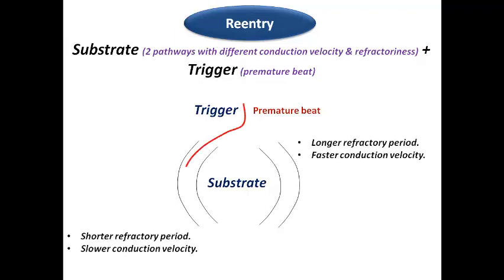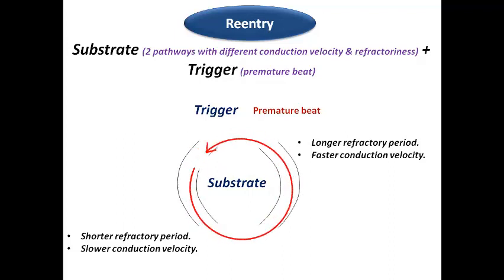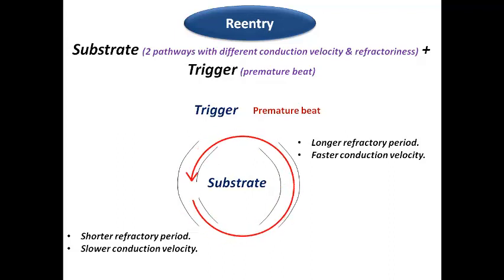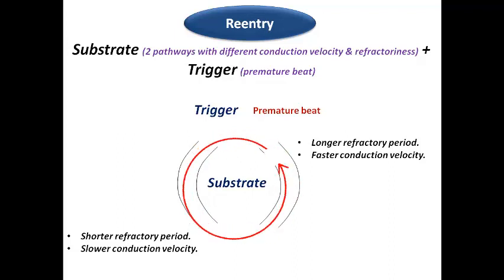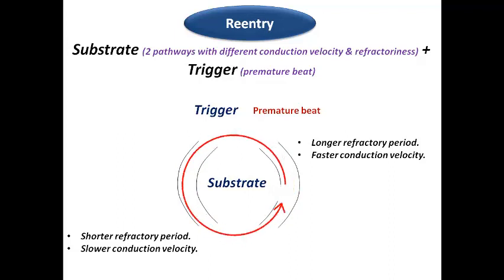The impulse passes antegradely down the pathway slowly, and when it reaches the tail of the first pathway, the first pathway has recovered from refractoriness. It has faster conduction velocity, so the impulse passes retrogradely in the first pathway to form a complete re-entrant circuit. So we have two pathways with differences in refractory period and conduction velocity; the impulse gets blocked in one and when it reaches the tail of the first pathway it passes retrogradely.